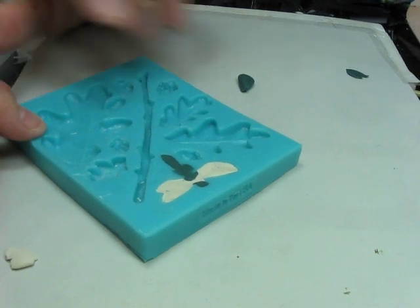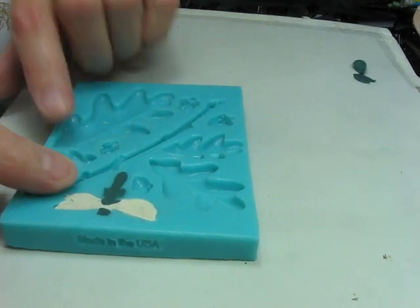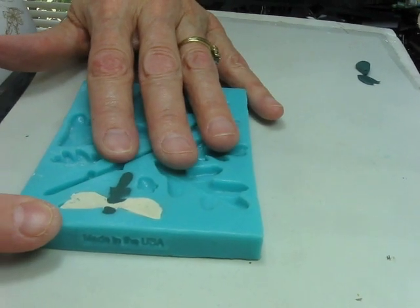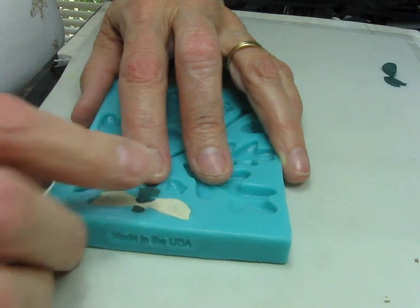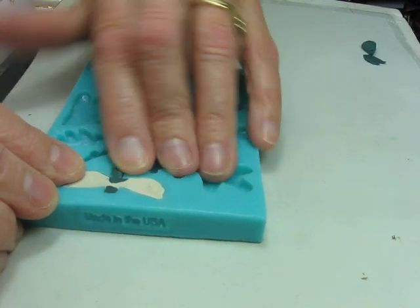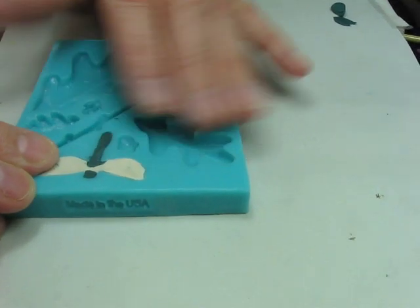To further clean up the molds we're going to take our fingers now and we're going to drag back into the mold the clay that has come out and spilled over onto the solid part. So holding the mold with one hand I'll take one finger and gently stroke the excess clay back into the inside.